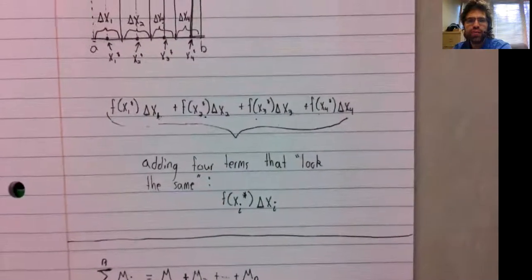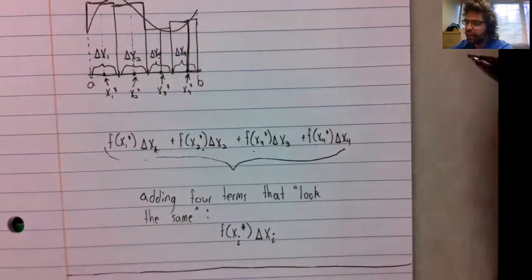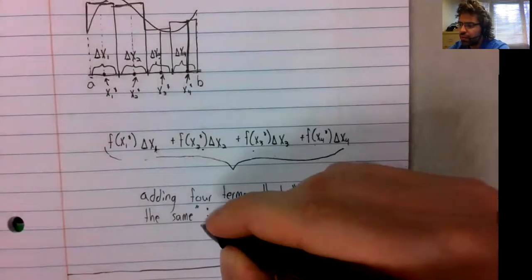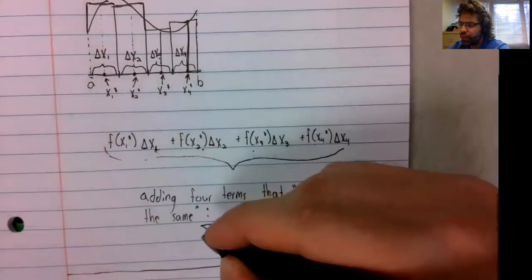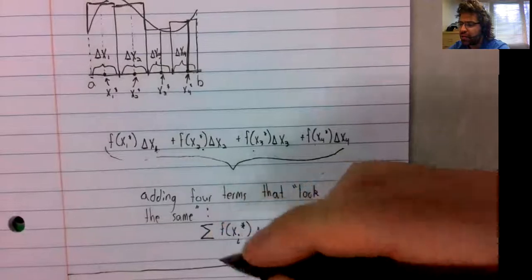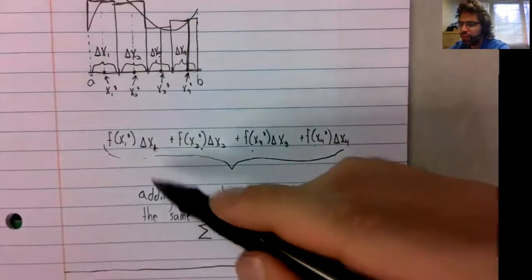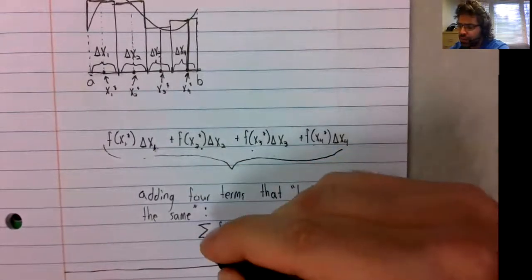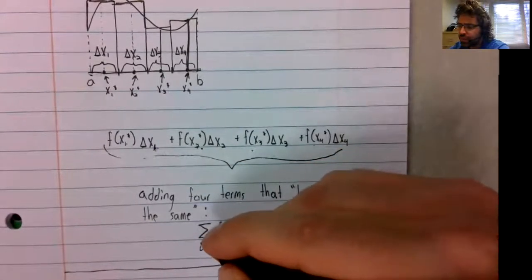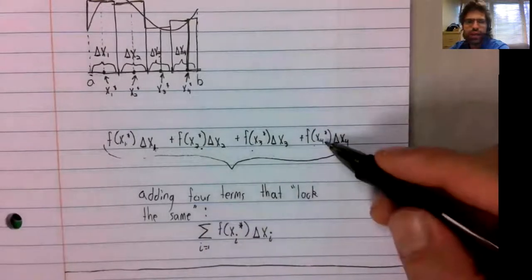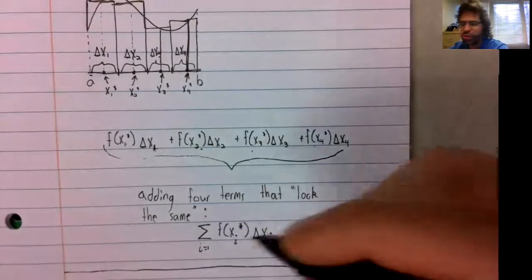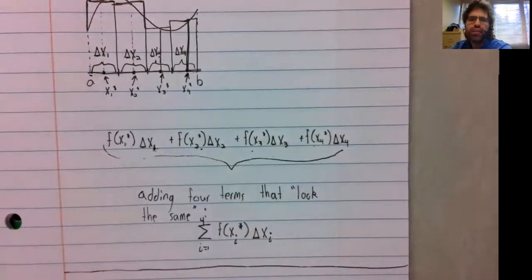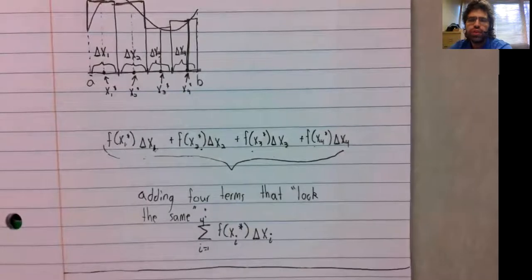So tying this back to what we have here, we're adding these terms together. We start at one and we end at four. And there's summation notation.